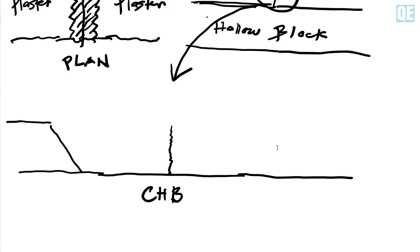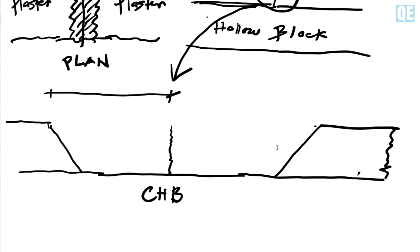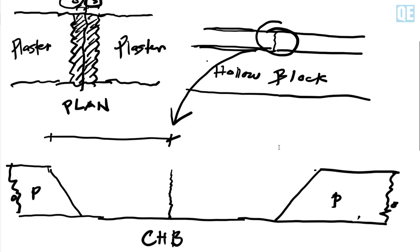What you are going to do is make the cut slanted. This is the continuation of the plaster - five centimeters on this side and also five centimeters on the other side. Make sure you cut it slanted, because the purpose of this is a keyed joint. That's why we want it to be slanted.